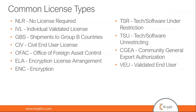Some common license types for EAR control law include NLR (No License Required) and IVL (Individual Validated License). For ITAR, common license types include DSP-5 and Manufacturing License Agreement (MLA). Common legal control blocks seen in SAP GTS customs documents include issues with license, partner function, numbering scheme, legal regulation, and determination procedure. Once you see the message in the log, you should know what action to take in the system to resolve the block.